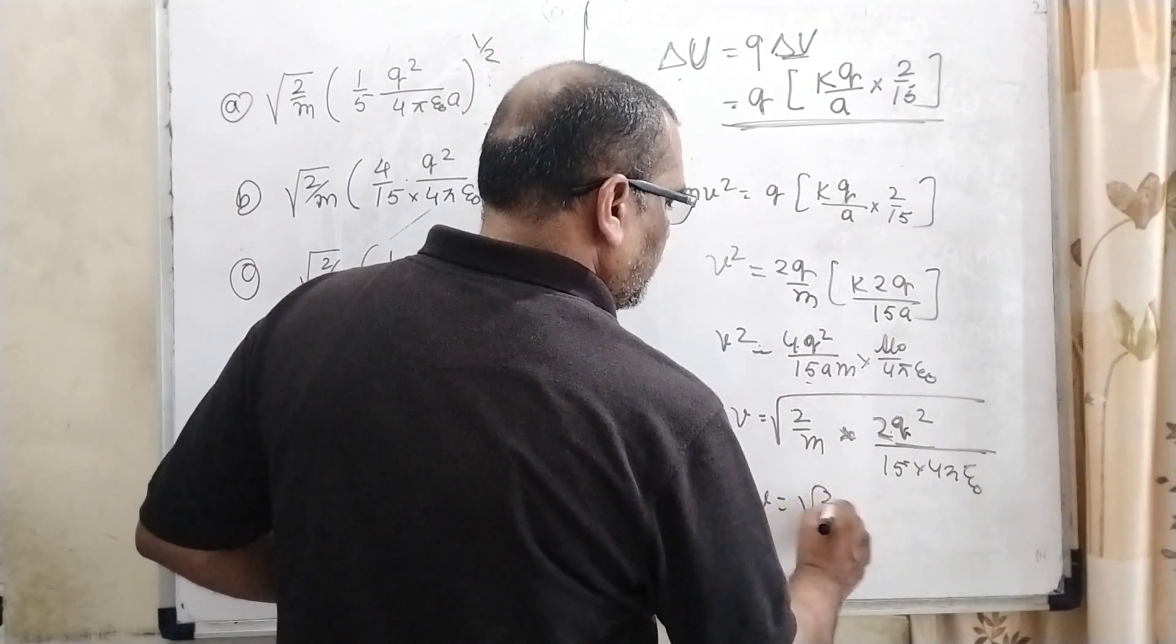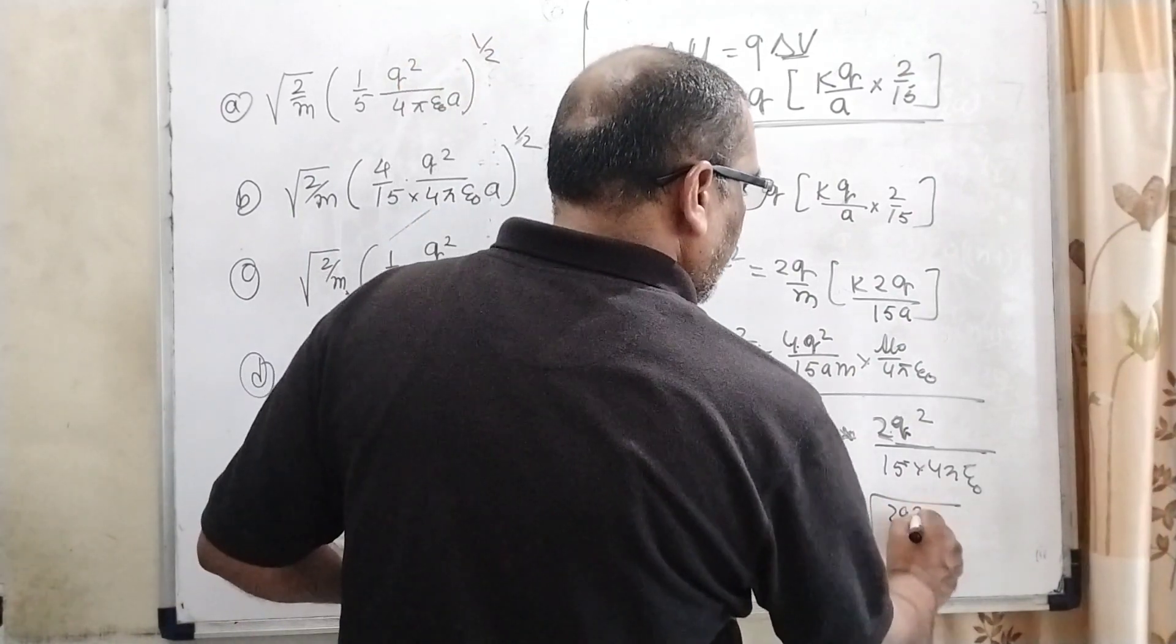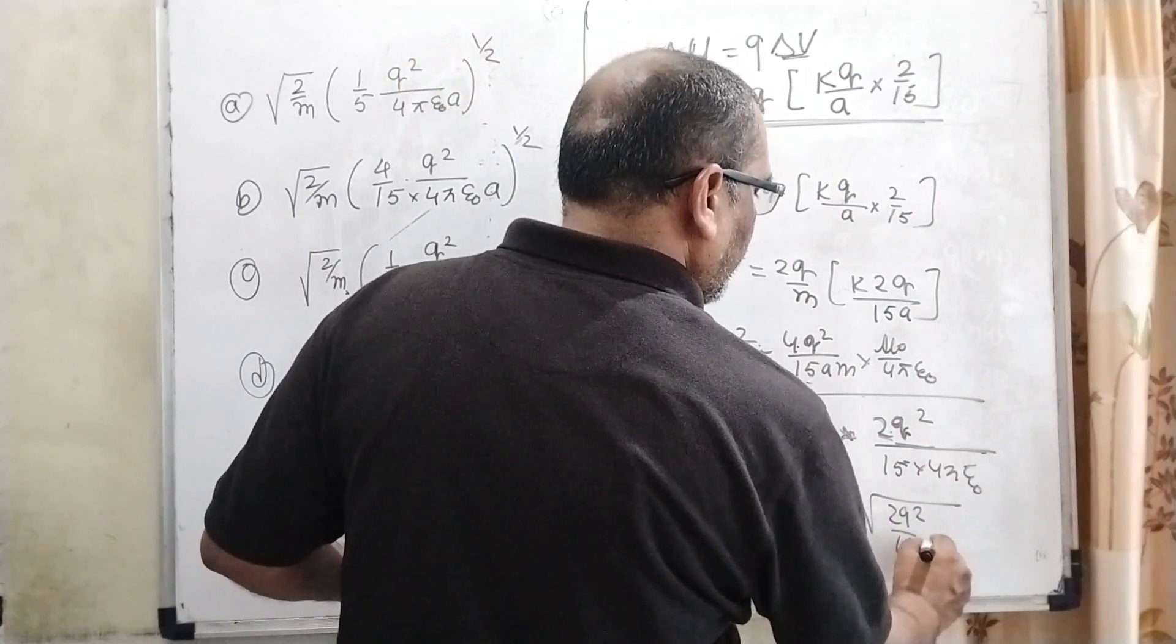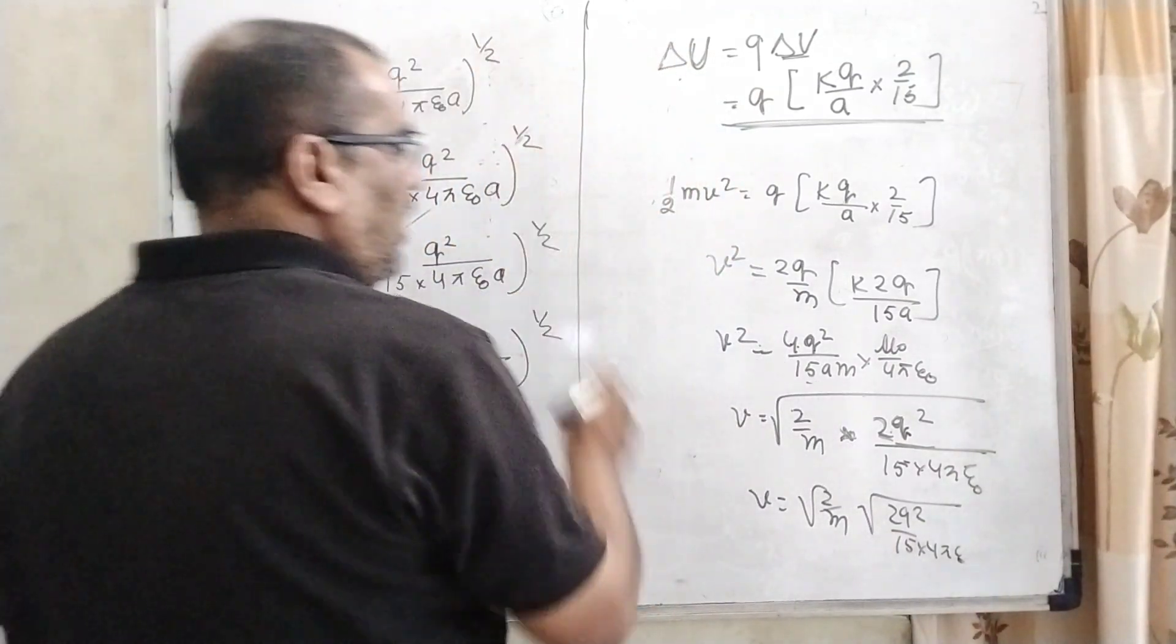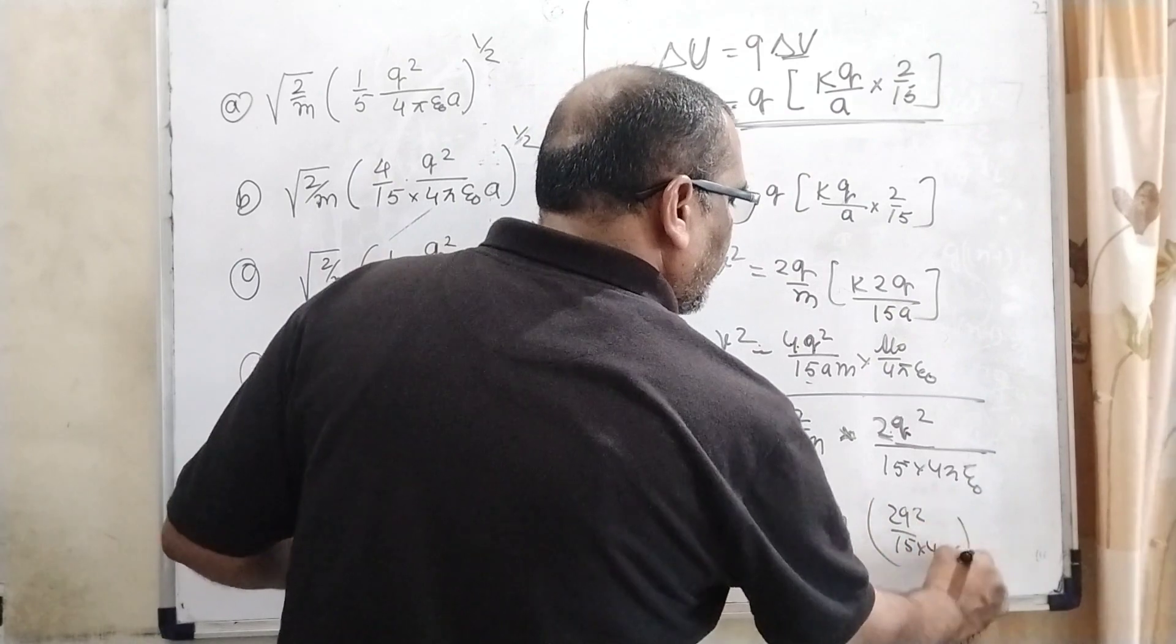Now v equal to root 2 by m, root 2q squared by 15 into 4 pi epsilon naught a. But here given the power half, so in the place of symbol we have to put the power.